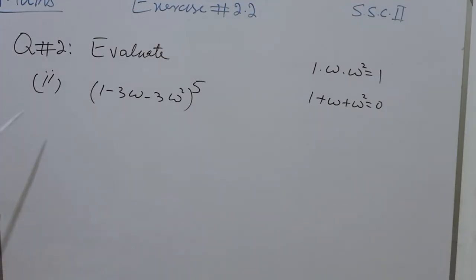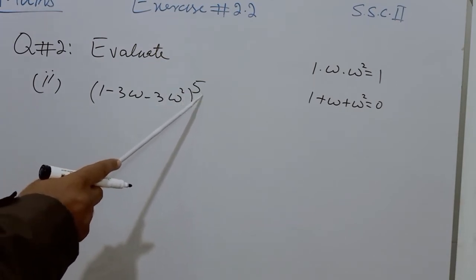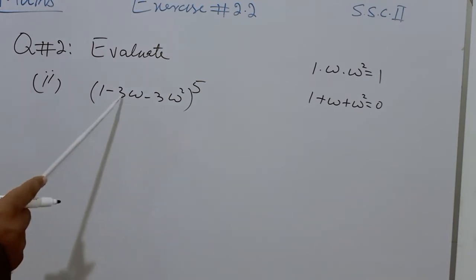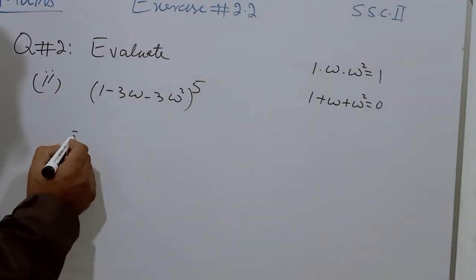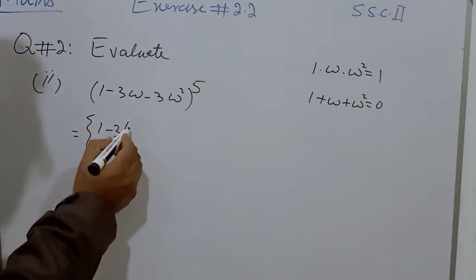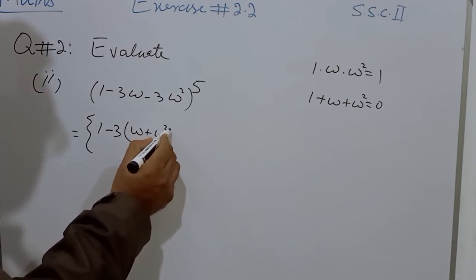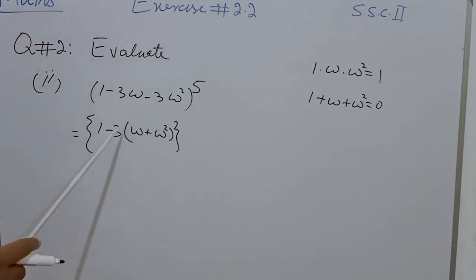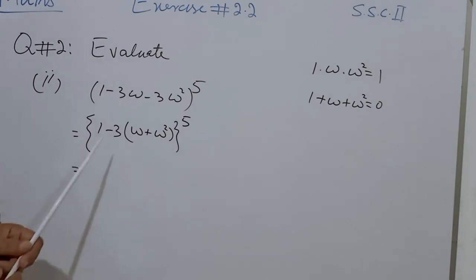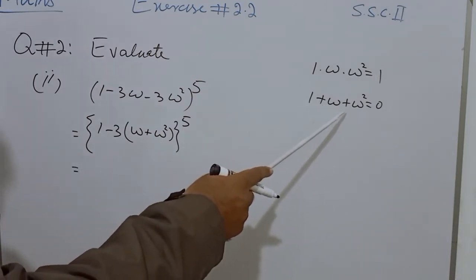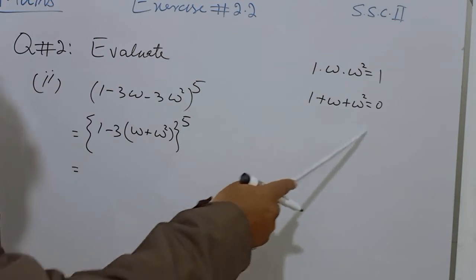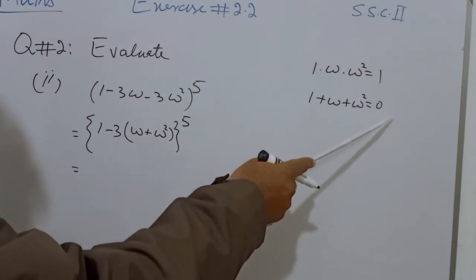The second part of Question 2 is (1 minus 3omega minus 3omega squared) to the power of 5. We will take minus 3 as common from the last two terms and it is written as 1 minus 3 as common, with omega plus omega squared in the bracket. Omega plus omega squared equals minus 1 because 1 plus omega plus omega squared equals 0, and when we transfer the 1 to the other side it becomes minus. So omega plus omega squared equals minus 1.